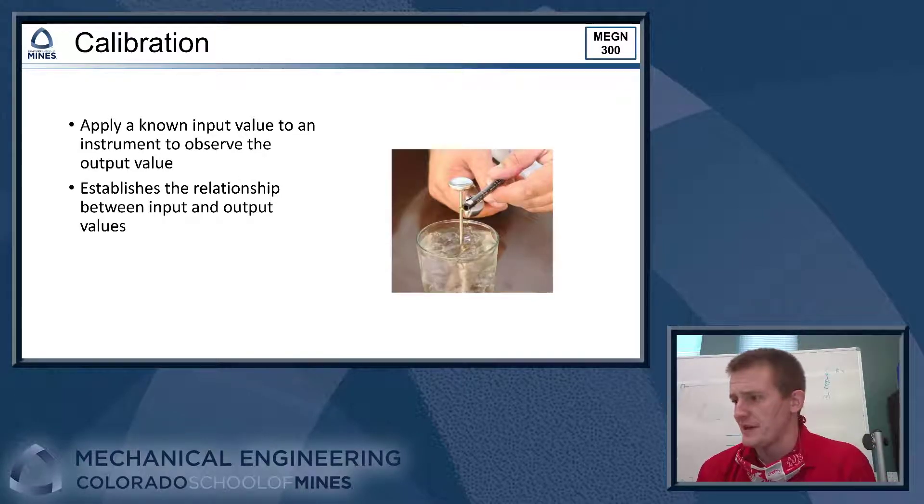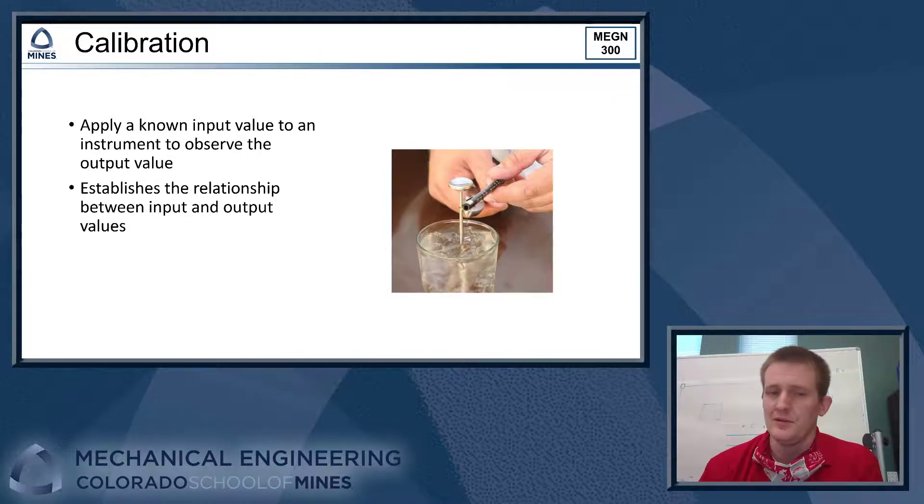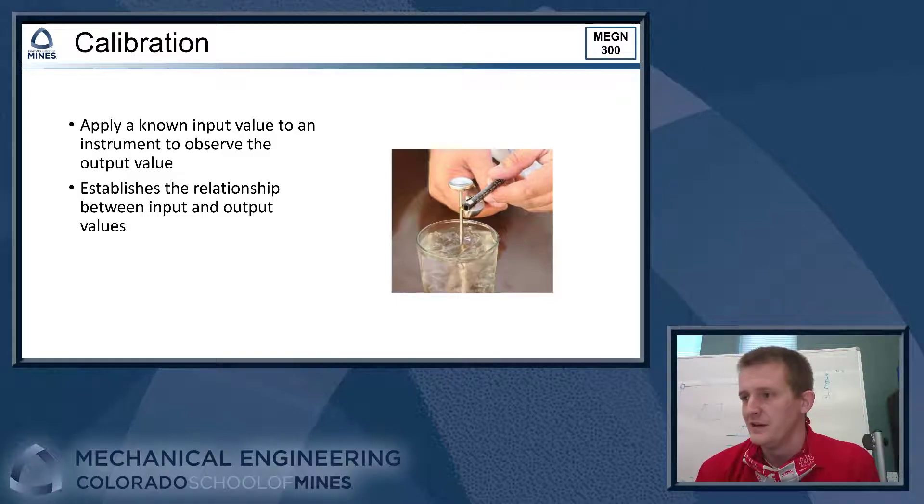All right, so first of all, let's talk about what calibration is generally. Calibration is the process of applying a known input value to an instrument to observe the output value. We want to establish a relationship between input and output values for an instrument so we can correct for any bias errors. So here we've got a picture. We've got a thermometer going into a glass of ice water. Melting ice will be zero degrees Celsius. We have a known temperature that we can apply to this thermometer to see if its output reading is correct and adjust it if necessary.